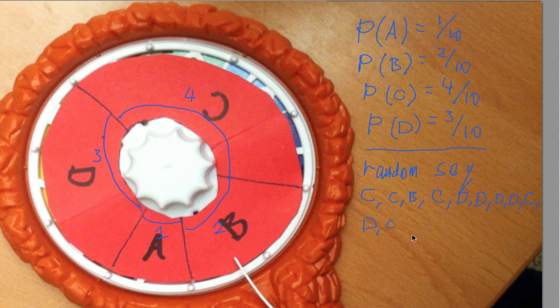So those I'll denote by P hat. So P hat of A is equal to 0 because A doesn't appear at all. P hat of B is equal to 1/11 because B appears once in this sequence of 11. P hat of C is equal to 5/11, and P hat of D is equal to 5/11.